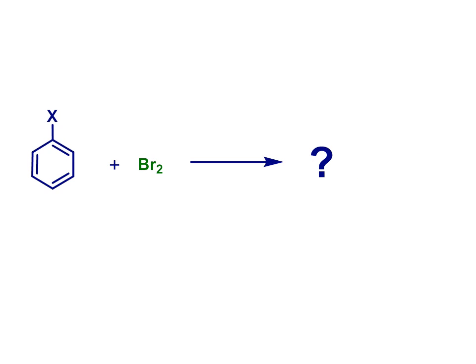But what if there's already a substituent, i.e. some other group, on the aromatic ring? Well not surprisingly, this makes things more complicated.